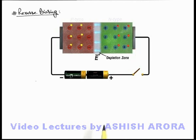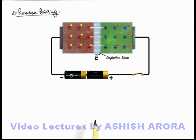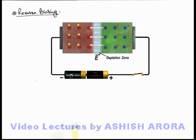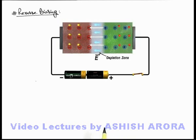When we close the switch, you can see that the electric field established by the battery is in the same direction as the internal electric field, due to which the barrier potential or the junction voltage further increases. This electric field further displaces the holes of the p side toward the left, and electrons of the n side toward the right, because the electric field exerts force on negative charges in the direction opposite to it, and on positive charges in the direction of the field.